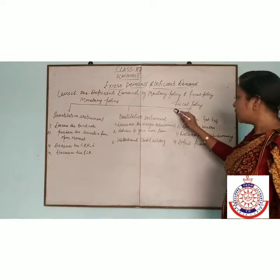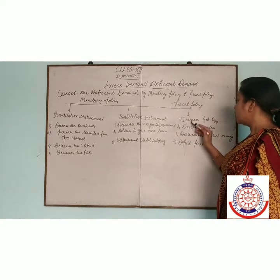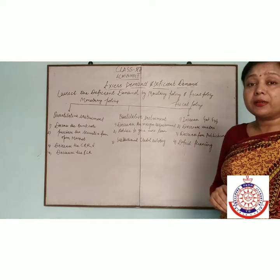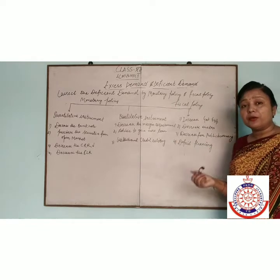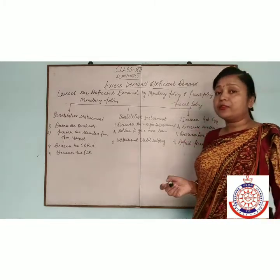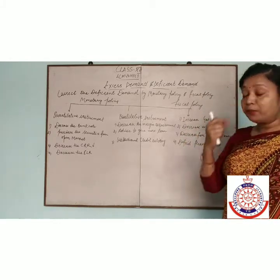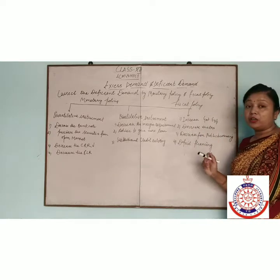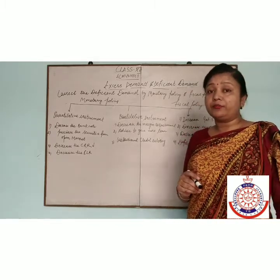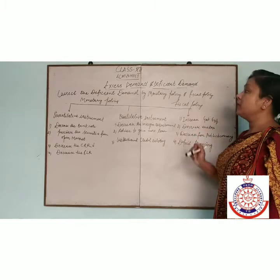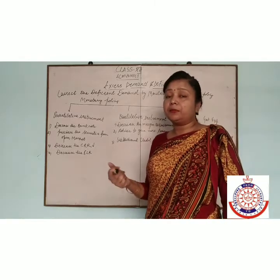Now some fiscal instruments used by the government. First is increase in government expenditure. If there is less demand in the economy, the government will increase the expenditure. If government increases the expenditure, then the problem of deficit demand will be removed. Second is decrease in taxes. The government imposes different types of taxes on the public and corporate sector. If government decreases the tax, then disposable income will be increased. And if disposable income is increased and demand for goods and services is more, then the problem of deficit demand will be removed.